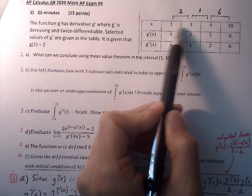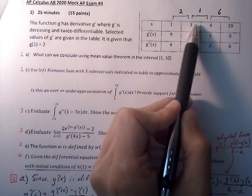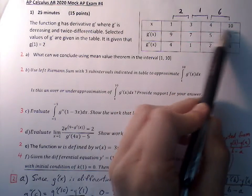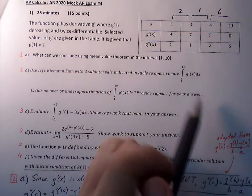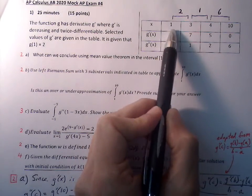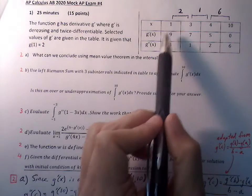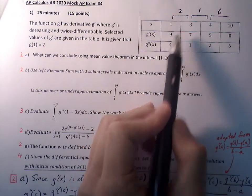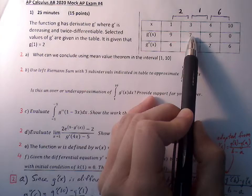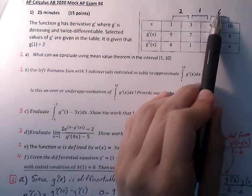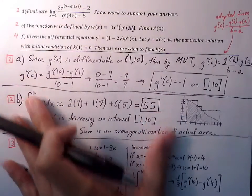Each subinterval we subtract the x-values to find the width. First subinterval: three minus one gives width of two. Second interval: four minus three gives width of one. Third interval: ten minus four gives width of six. For a left Riemann sum, we choose the left height from the G prime values. Width two, height nine: two times nine. Width one, height seven: one times seven. Width six, height five: six times five. Adding the three areas together: eighteen plus seven plus thirty equals fifty-five.